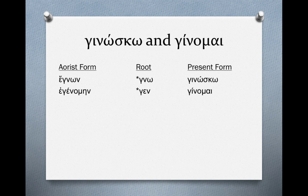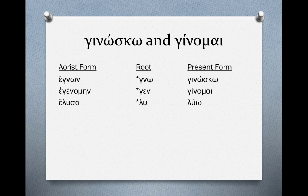It has the augment, and just as ginomai is deponent in the present tense form — in other words, it has that middle-passive ending, -mai — it's also going to be deponent in its aorist form. Now, if we consider a verb like elusa, the lexical form is luo, and the root is lu. This is one where its root never changes in any tense. Remember, we've talked about verbs whose root never changes no matter what tense they appear in. Eginon and eginomai, the first two we've looked at, follow the second pattern.